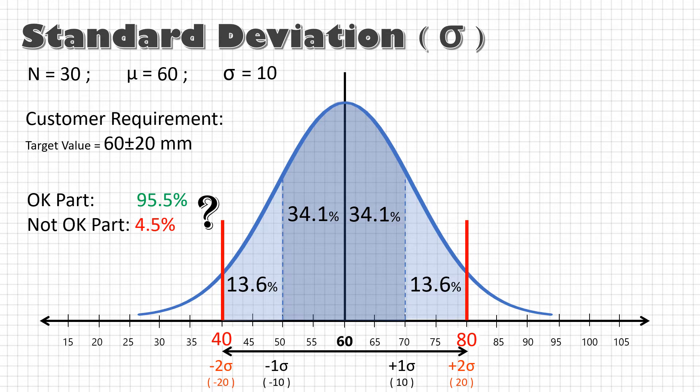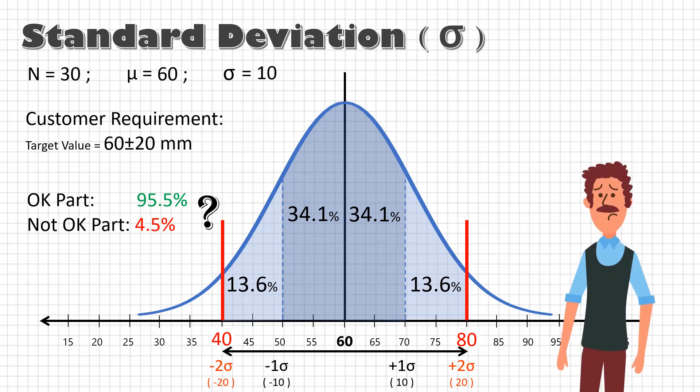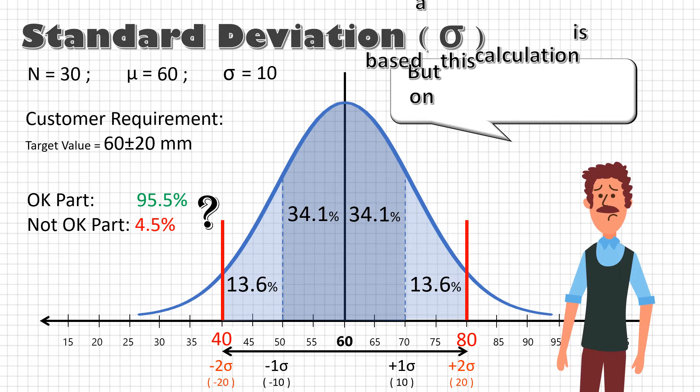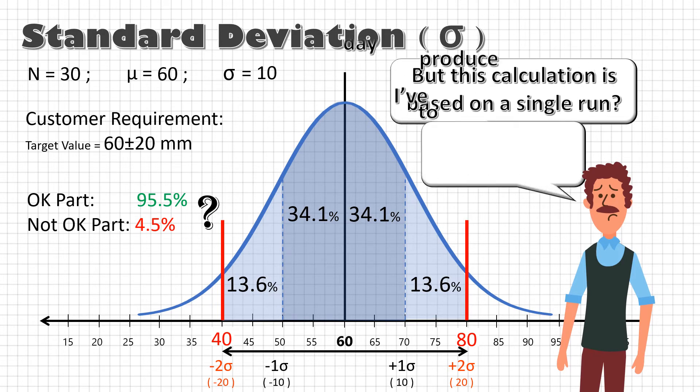Actually, there is the catch. This process curve is based on 30 parts that were made in a single run. However, if I were to produce a million parts, variation may occur due to some common causes like operator change, material change, equipment maintenance condition.